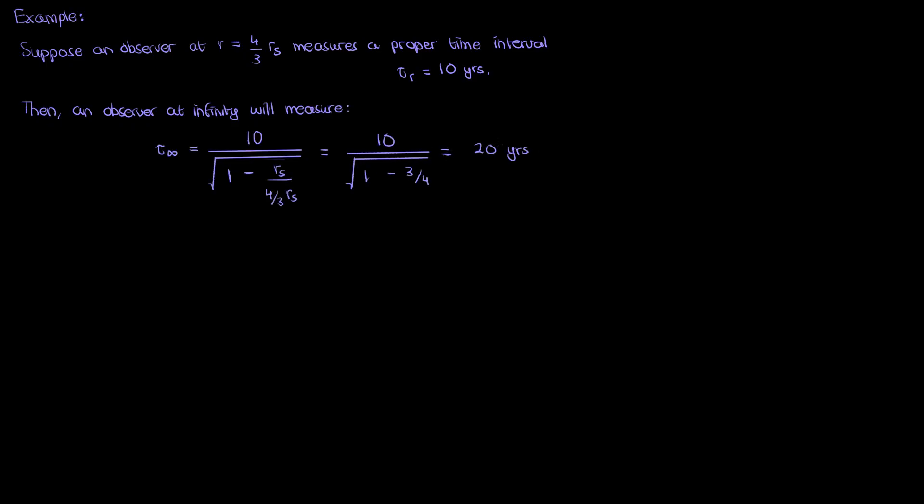So let's do a quick numerical example involving gravitational time dilation. Let's say I have a really small sized planet such that I have an observer outside the planet who's actually at 4 over 3 times the Schwarzschild radius r sub s. Suppose that this observer measures 10 years on their clock, so tau sub r is 10 years. As a result, another observer at infinity will measure the corresponding time on their clock as 20 years.